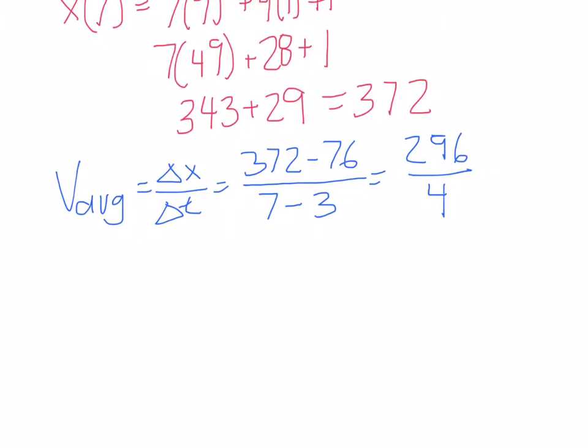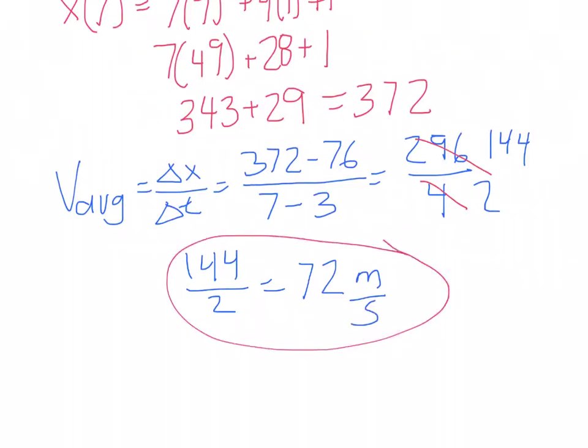And this will give us 74 meters per second. And there we have it, that is the average velocity for that interval.